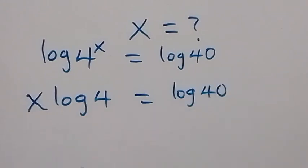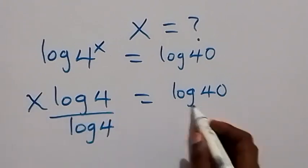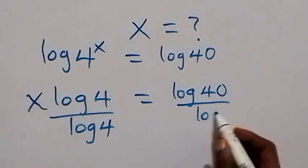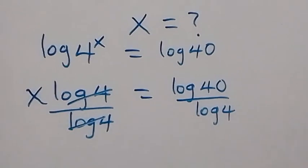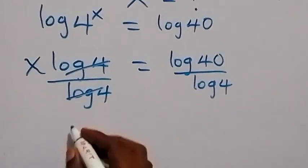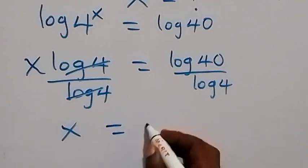Then we can divide both sides by log 4. This log 4 cancels out, so we have x now equals to log 40 over log 4.